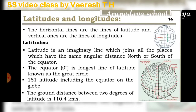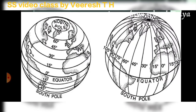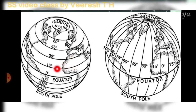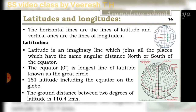The ground distance between two degrees of latitude is 110.4 kilometers. So the distance between one latitude and the next is 110.4 kilometers. These two latitudes are connected at that distance.